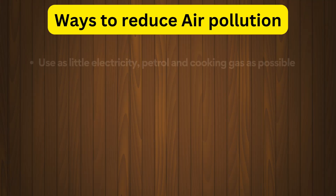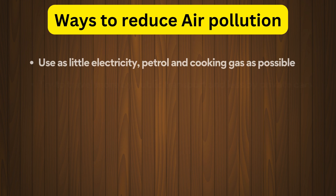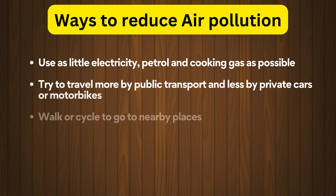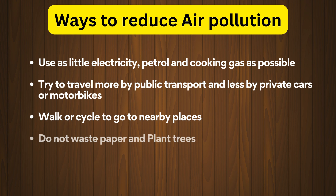What are the ways to reduce air pollution? Use as little electricity, petrol, and cooking gas as possible. Try to travel more by public transport and less by private cars or motorbikes. Walk or cycle to go to nearby places. Do not waste paper. Plant trees.